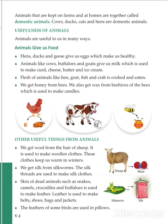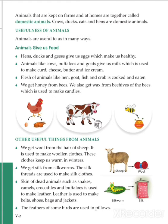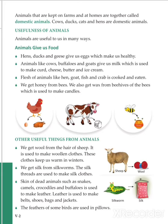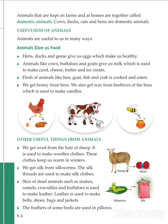Other than food, there are many useful things we get from animals — like wool, silk, and leather. We get wool from the hair of sheep, which is used to make woolen clothes that keep us warm in winter. We get silk from silkworms — the silk threads are used to make silk clothes and saris, which are very beautiful and expensive.